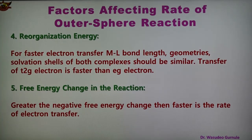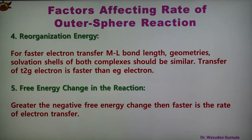The fourth factor is the reorganization of energy. Faster electron transfer between metal and ligand takes place and depends upon the metal–ligand bond length, geometries, and solvation sphere of both complexes, which should be similar. Transfer of T2g electrons is faster than Eg electrons.